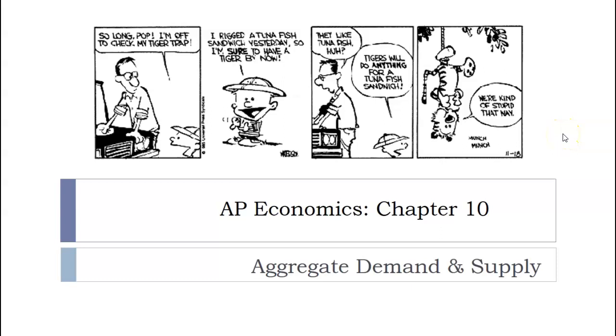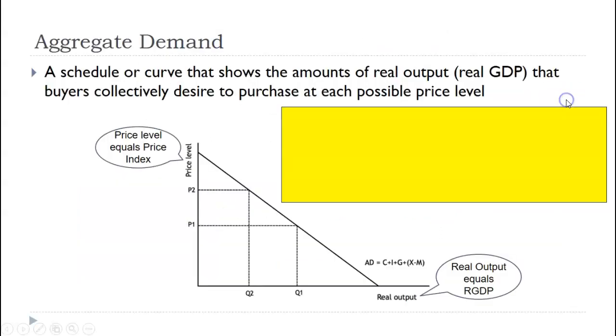Hi everybody, Mr. Farmer here, and today we're talking about AP macroeconomics, and we're looking at the aggregate demand curve. Here we go. So first off, the aggregate demand curve is a schedule or curve that shows the amounts of real output, real GDP, that buyers collectively desire to purchase at each possible price level.